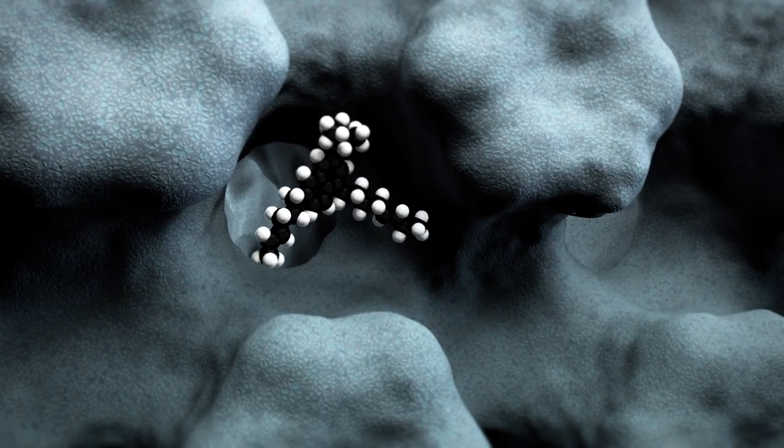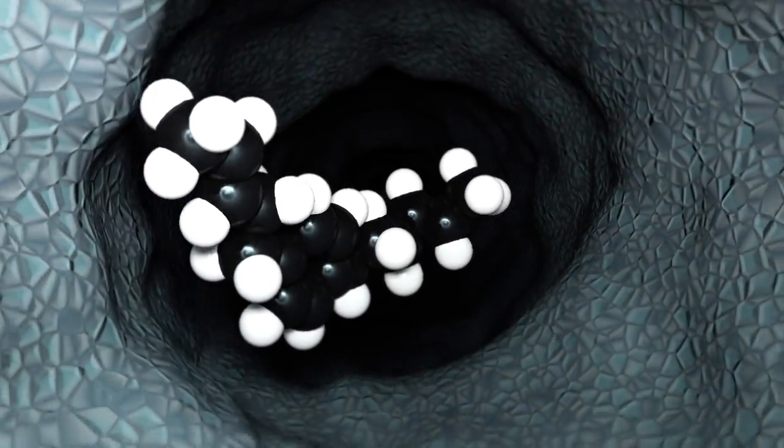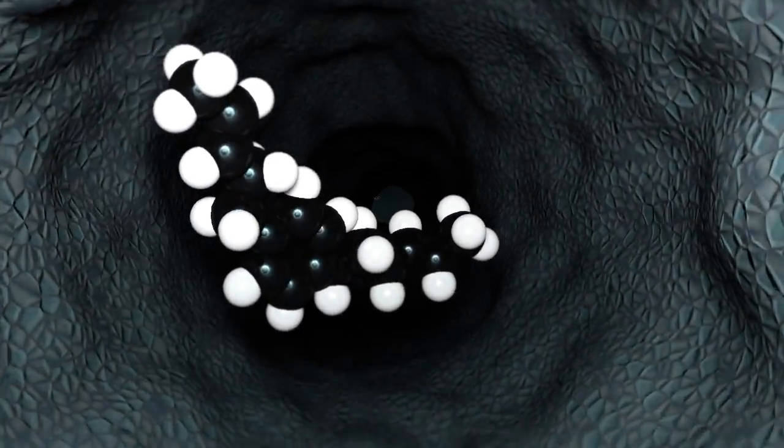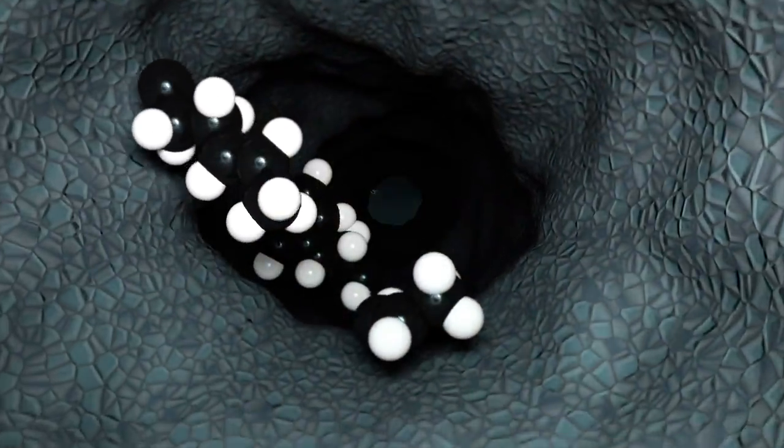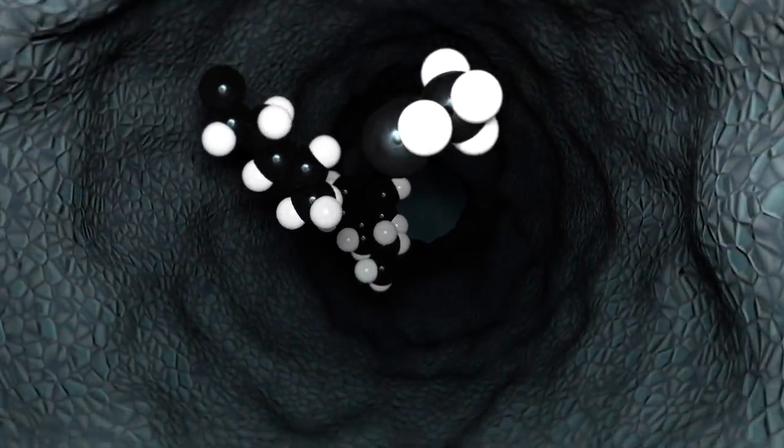Further, feed molecules that have cracked into valuable products have difficulty escaping the zeolite through the narrow micropores and therefore often overcrack into undesirable by-products like light gases. This diffusion limitation lowers product yields, process efficiency, and ultimately profits.